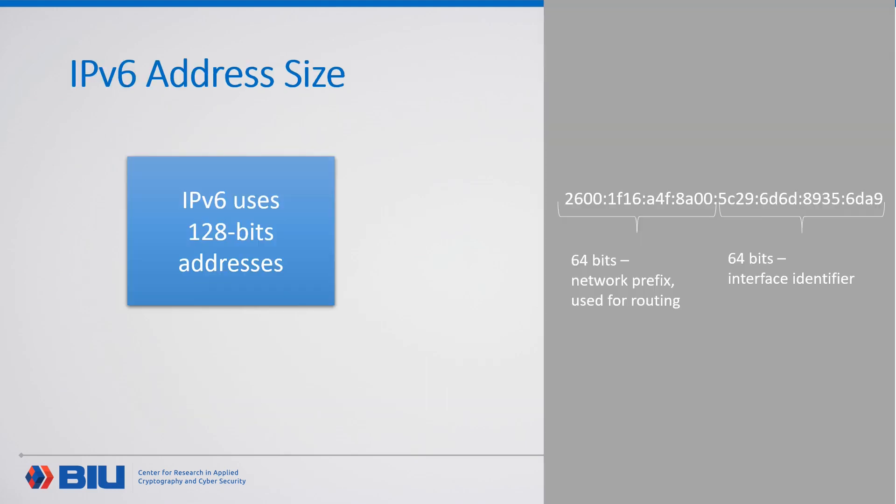The IPv6 address size. One of the changes IPv6 introduces is a 128-bit address. This address is composed from the high 64 bits, which are called the network prefix, and are usually assigned by the ISP, and the lower 64 bits, which are called the interface identifier. These lower 64 bits are generated by the client's computer to form the 128-bit address.